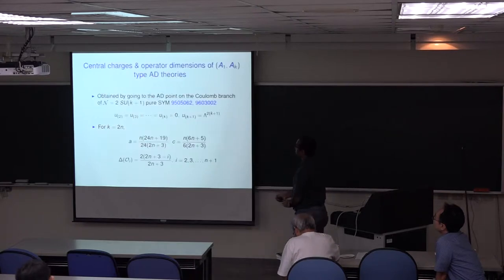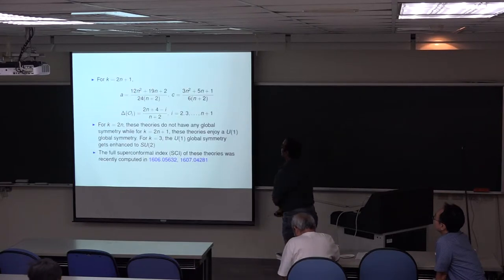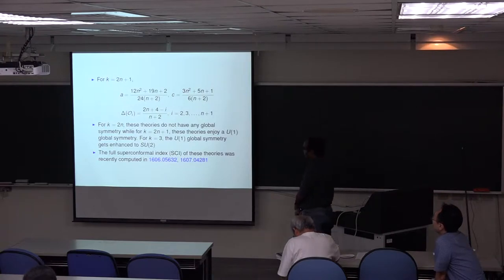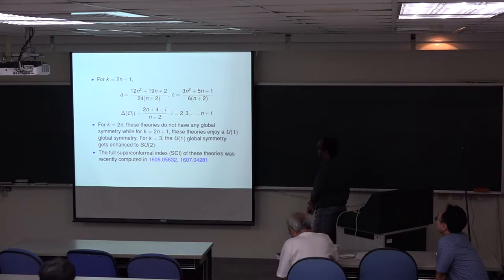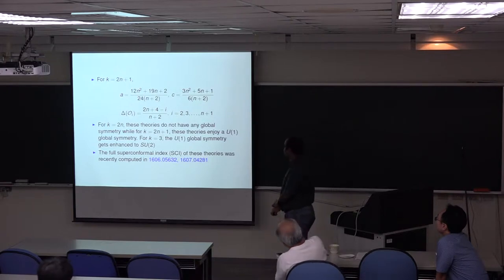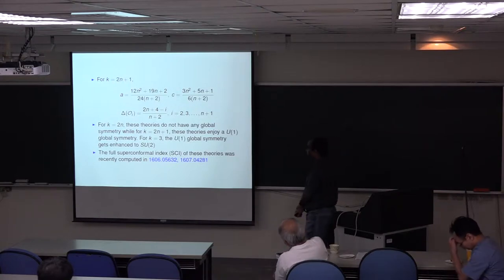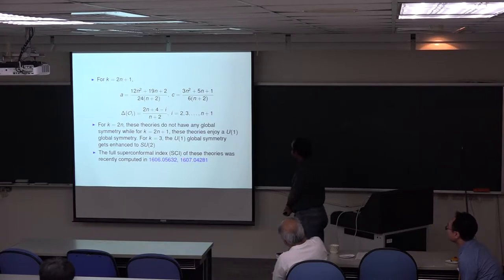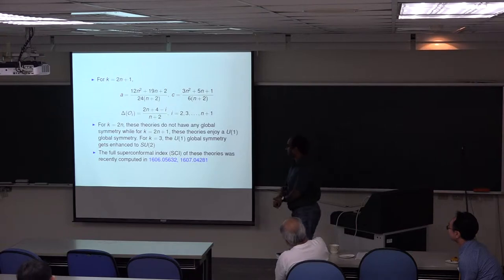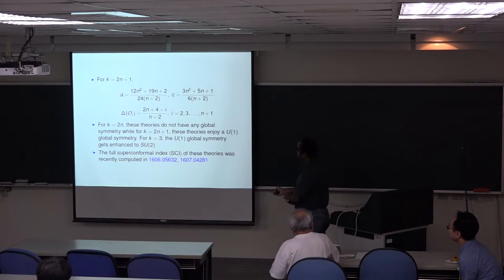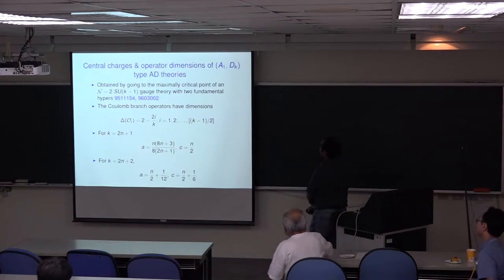For K equals 2N, these theories do not have any global symmetry, while for K equals 2N plus 1, these theories enjoy a U(1) global symmetry. For K equals 3, the U(1) global symmetry actually gets enhanced to an SU(2) global symmetry. The full superconformal index of these theories was recently computed by my collaborators Maruyoshi and Song, in the paper I mentioned earlier.